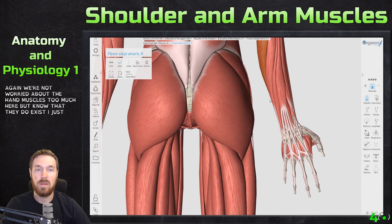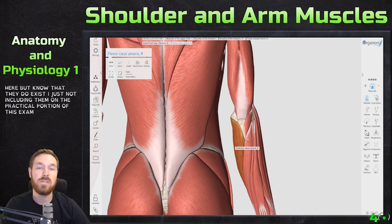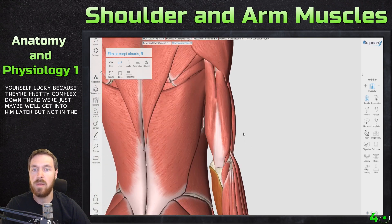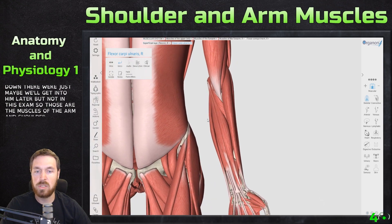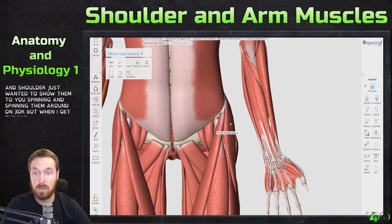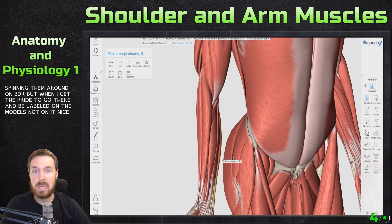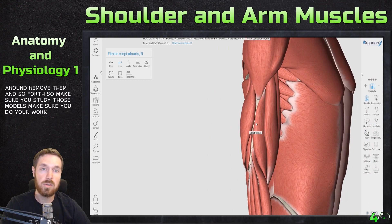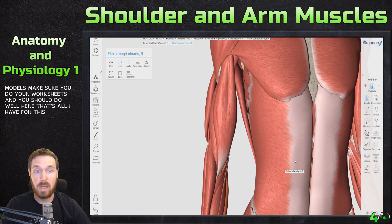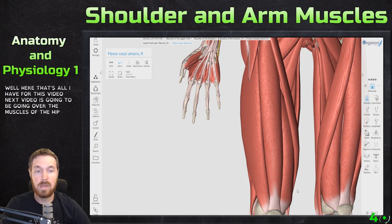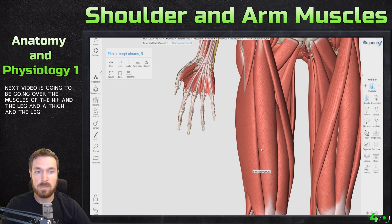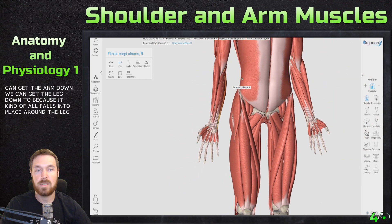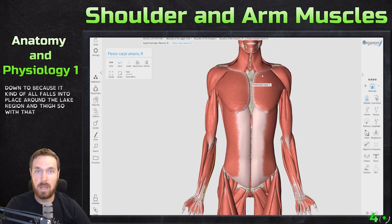We're not worried about the hand muscles here — they do exist but they're not included on the practical portion of this exam, so consider yourself lucky because they're pretty complex. Those are the muscles of the arm and shoulder. When the practical exam comes, they'll be labeled on the models, not on a nice 3D Organon where you can spin and remove things. Make sure you study those models, do your worksheets, and you should do well. Next video is going to cover the muscles of the hip, thigh, and leg — if we can get the arm down, we can get the leg down too. Hope you all have a great day, see you next time!